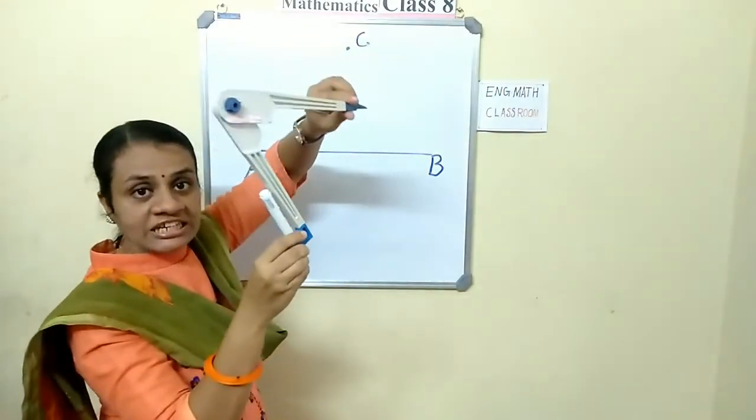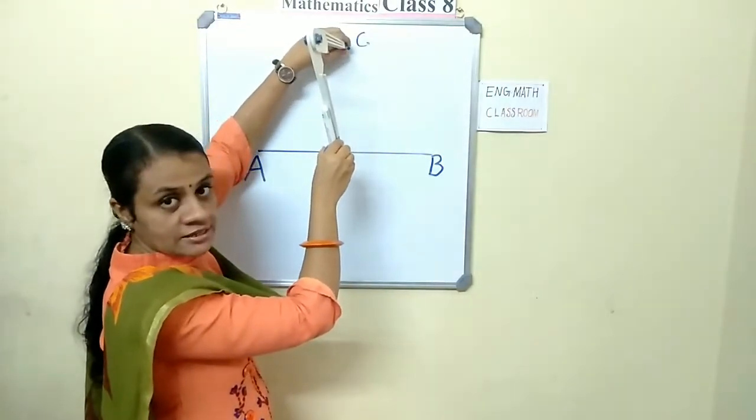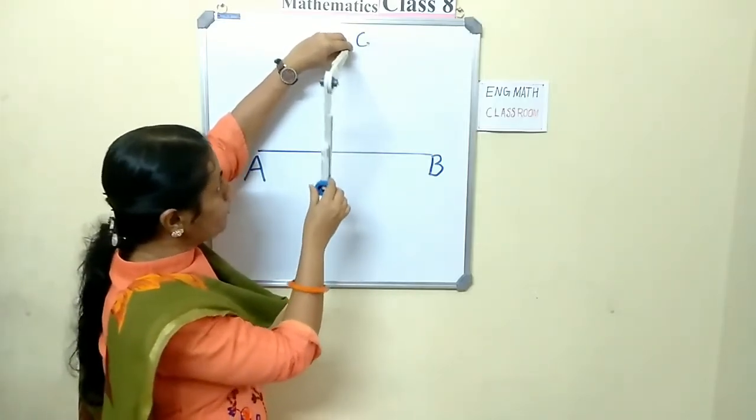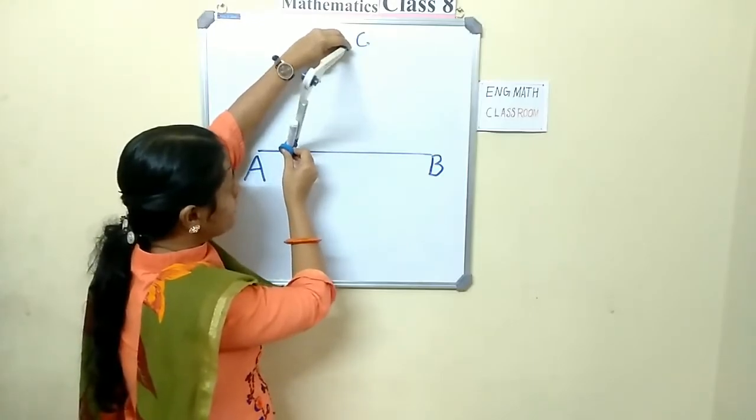Keep the needle of the compass on C and extend like this. Any length, you can extend, no problem. And cut an arc like this.